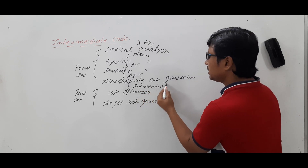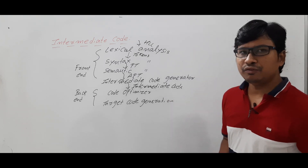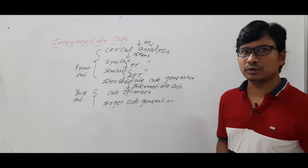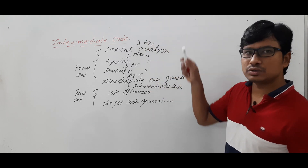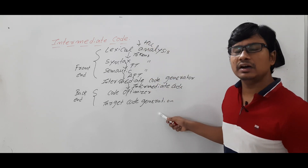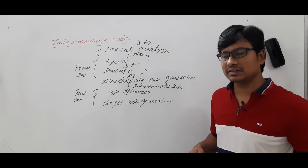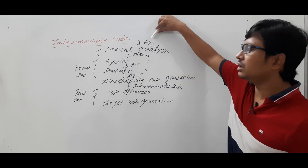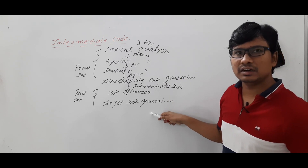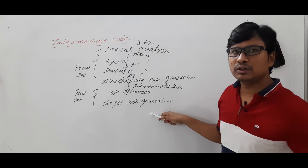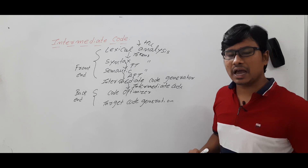The intermediate code generator will generate the intermediate code. If we do not have the intermediate code at all — let's say from the source code we are generating assembly code directly, which is dependent on the machine — then we have a high-level language and we are generating assembly code which is machine-dependent without intermediate code. What will happen then?